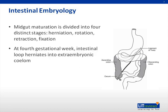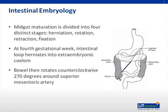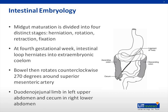During the fourth gestational week, the intestinal loop herniates into the embryonic coelom. The bowel then rotates counterclockwise 270 degrees around the superior mesenteric artery. The duodenal-jejunal limb is then fixed in the left upper abdomen and the cecum in the right lower abdomen, as demonstrated in this image.